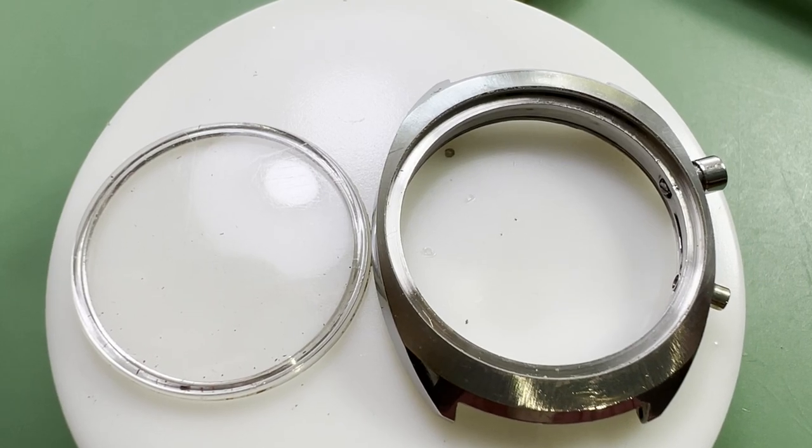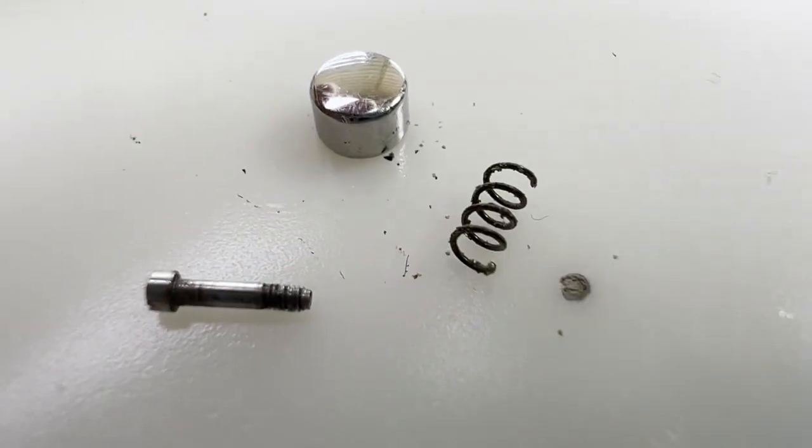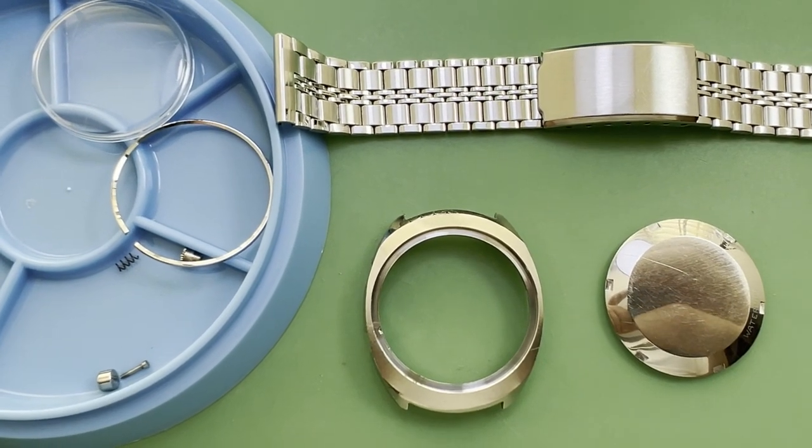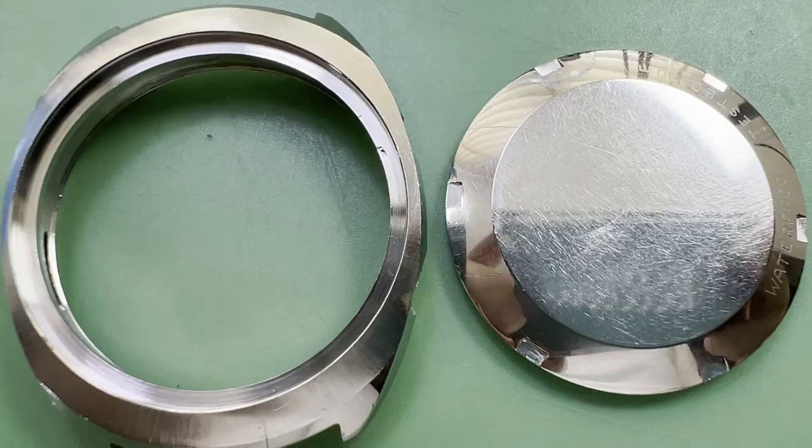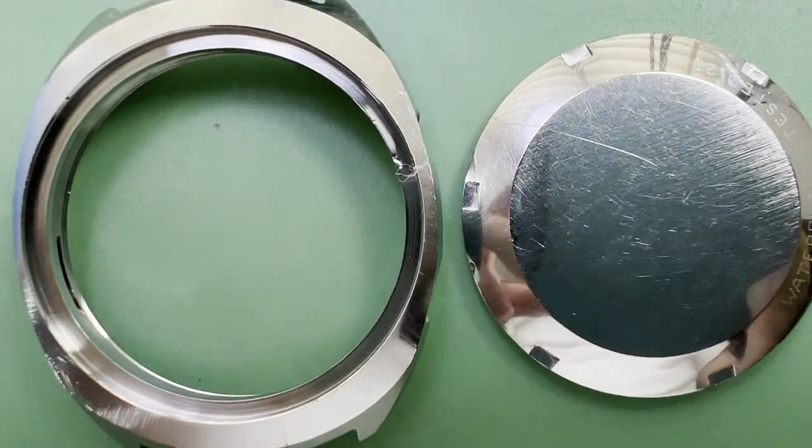Whilst the movement is being cleaned, let's turn our attention to the case. Let's remove the crystal, then the pushers and the pendant tubes. It will all be cleaned in a different ultrasonic bath before being polished later on. Here are the case and case back after cleaning. Now let's have a look at the cleaned movement.